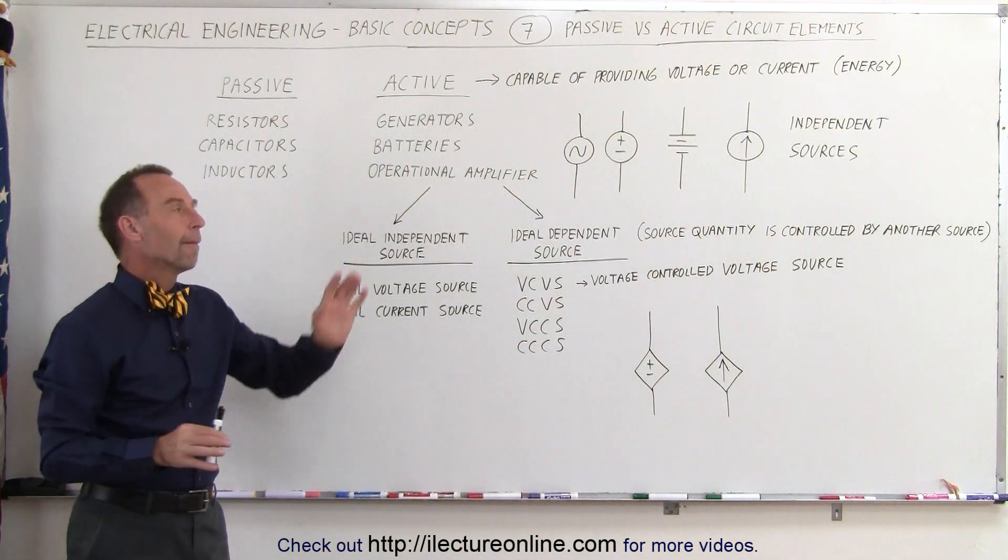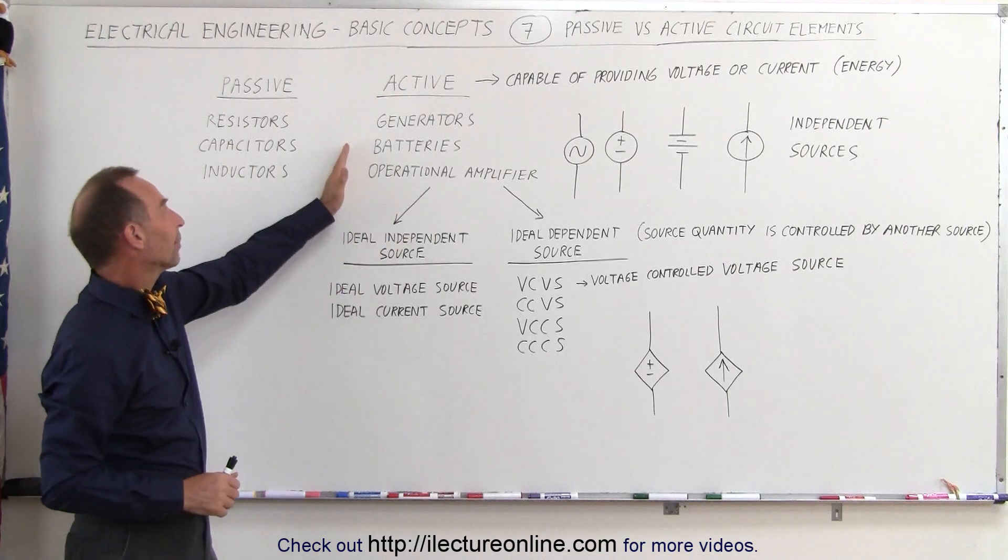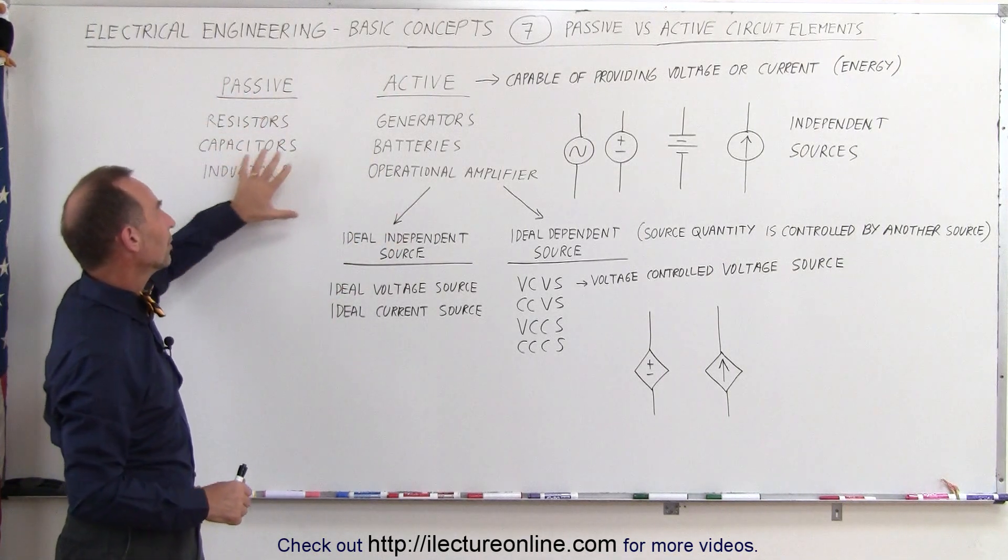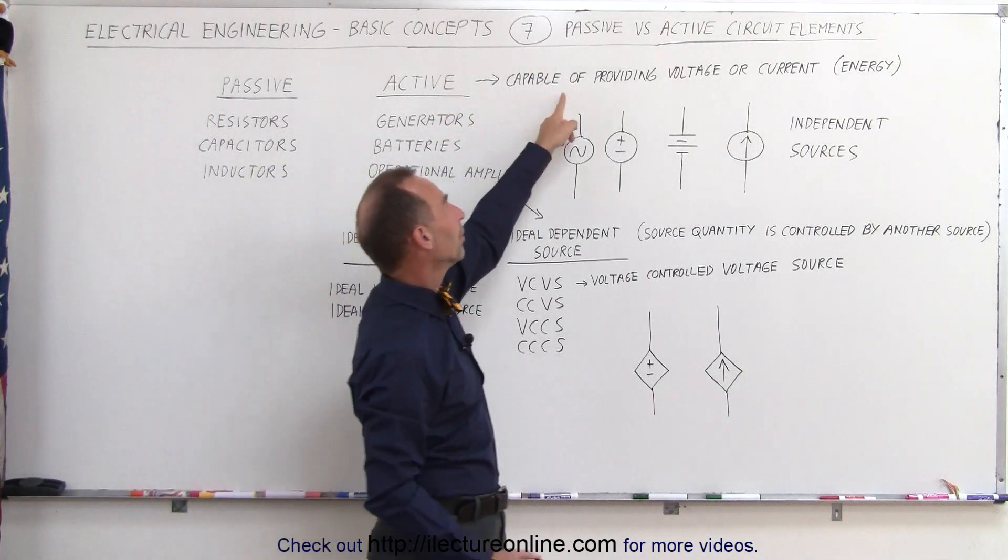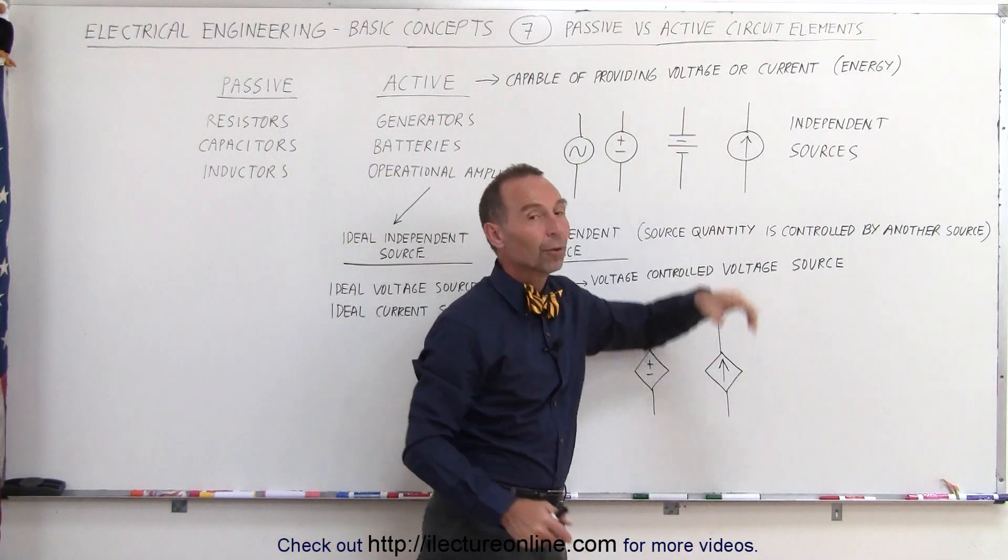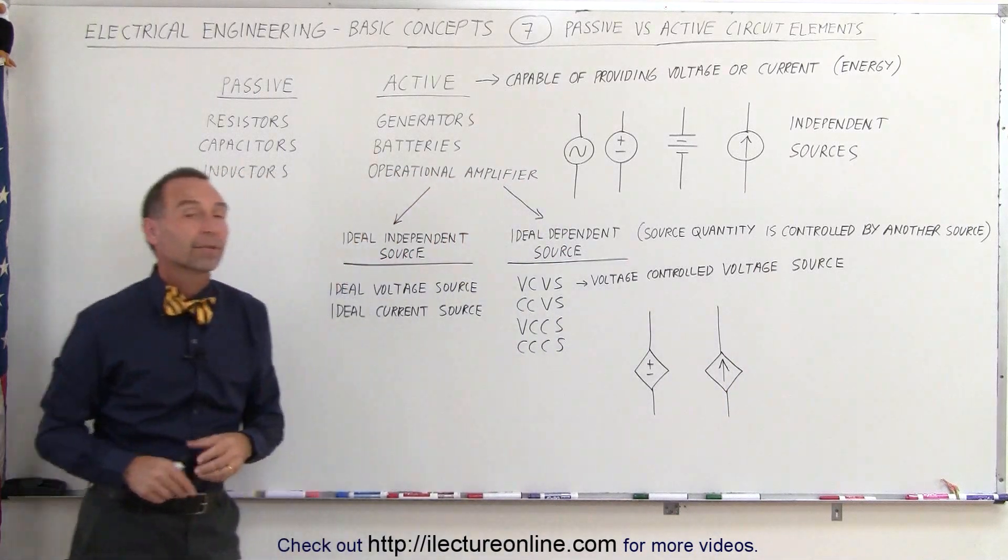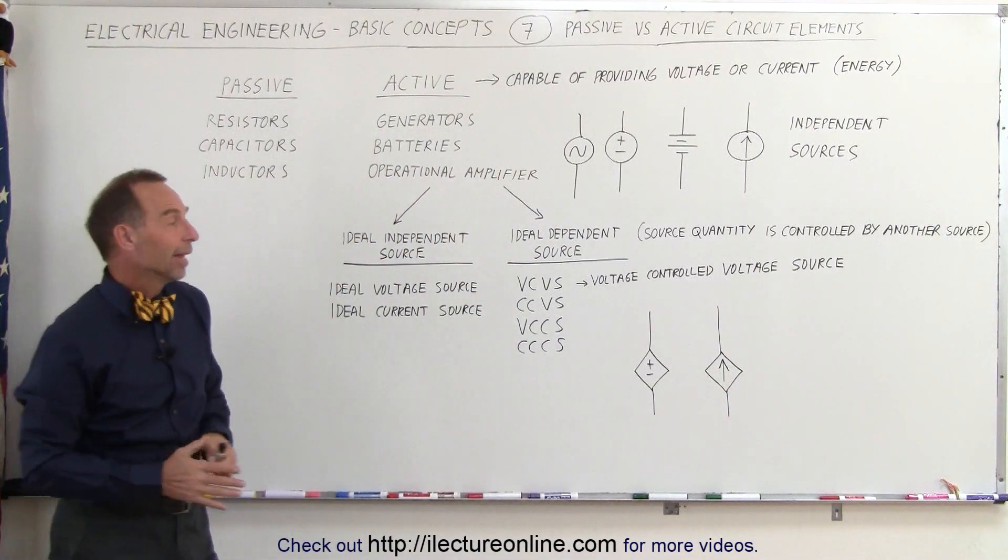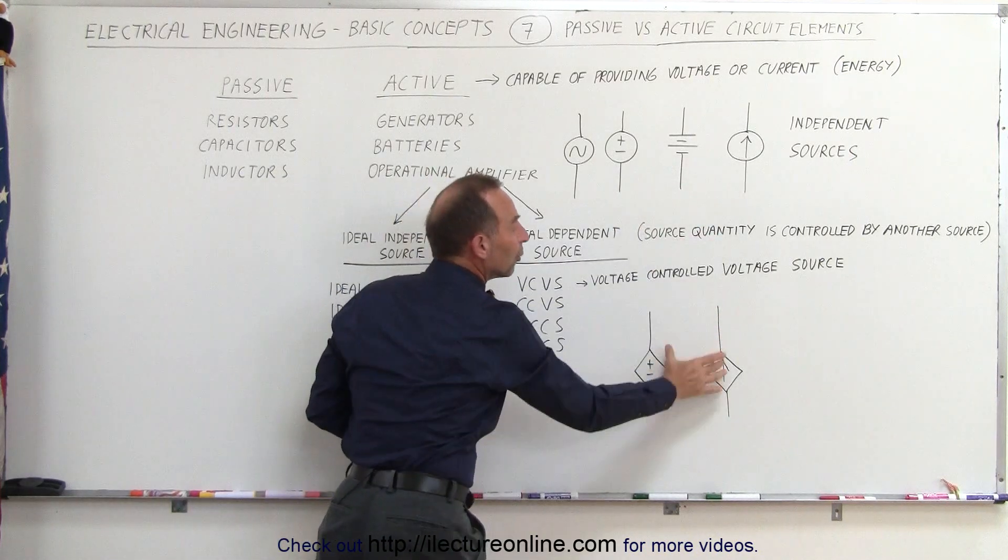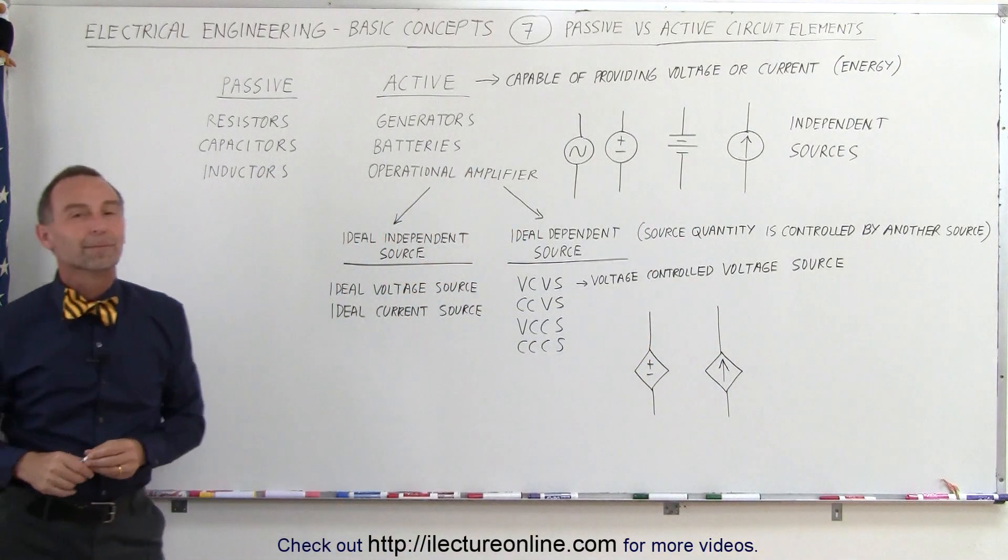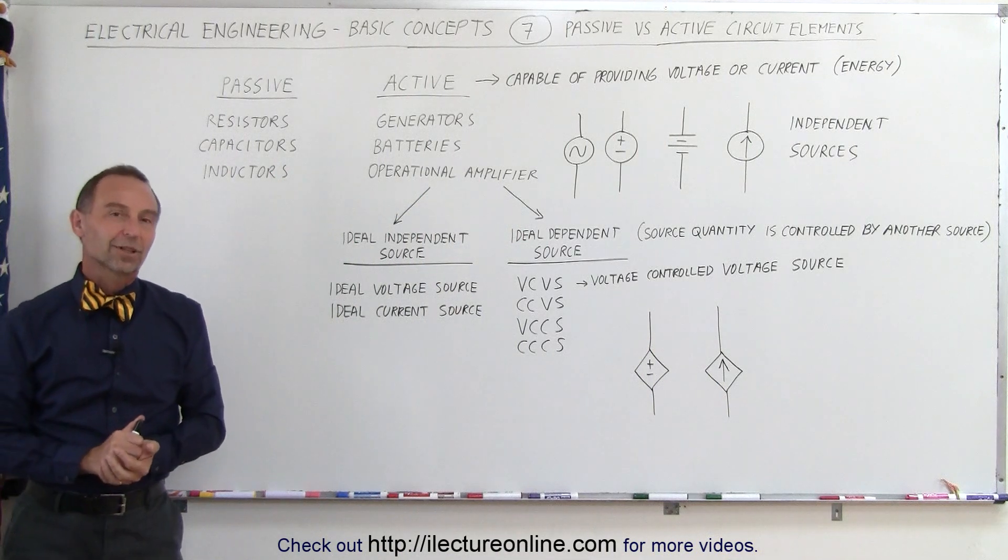Those are the different kinds of active elements to be separated from what we call passive elements. Remember these don't produce any energy. An active element is something capable of providing a voltage or a current which means it can put energy into the circuit. Hopefully that clears things up, so when you see these acronyms or when you see these kind of symbols now you know what they mean and how to deal with them. That's how we do it in electrical engineering.